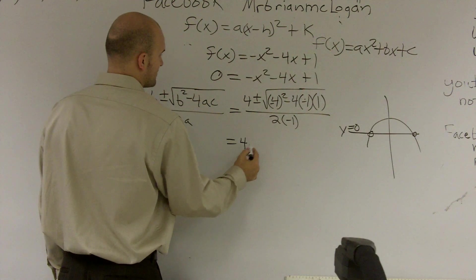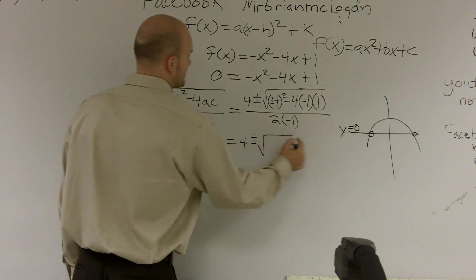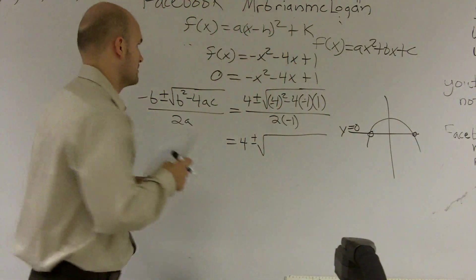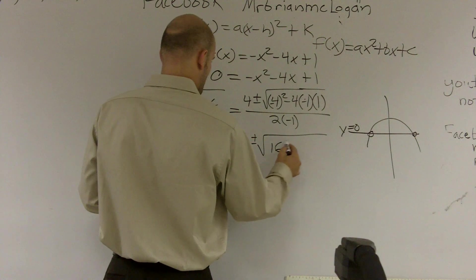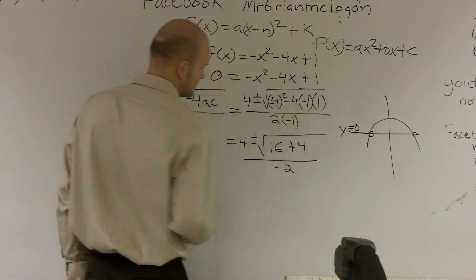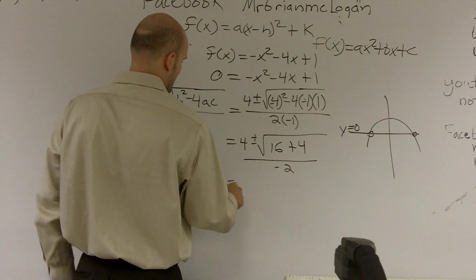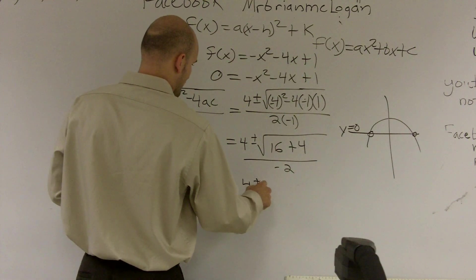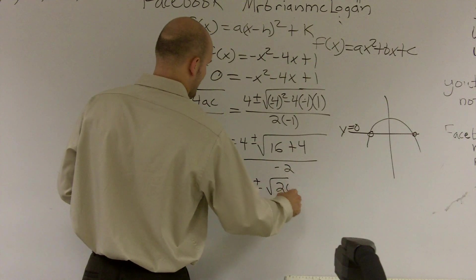Now I'm just going to do a little bit of math, negative 4 plus or minus, and I already did some of this, so just to save myself some work. I have 16 plus 4, all divided by negative 2, equals, I guess I should show you guys how to reduce that, should I?